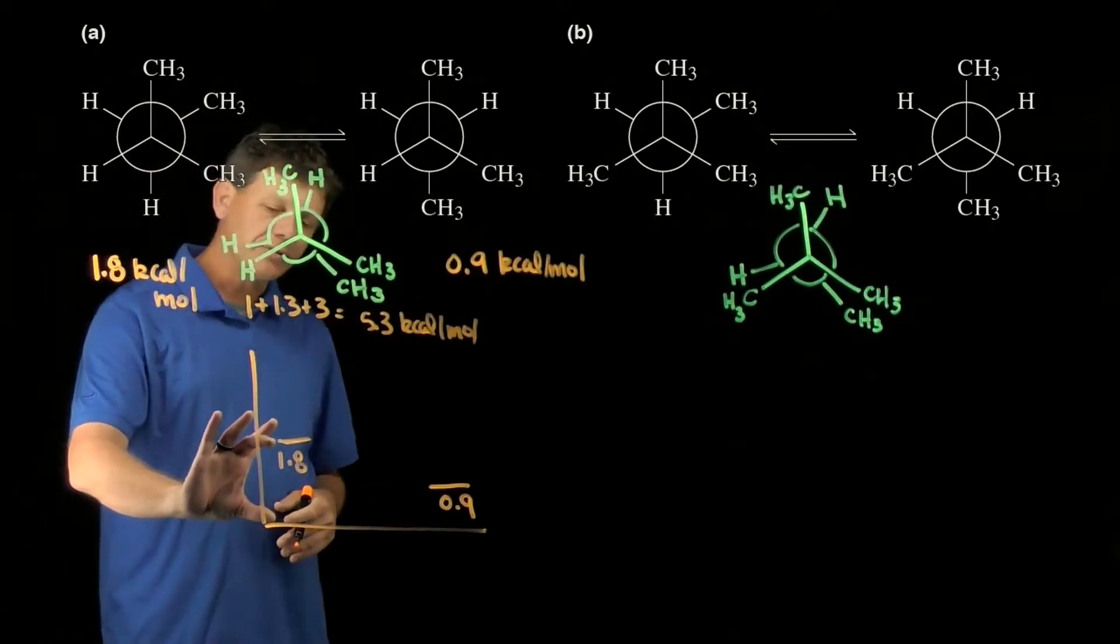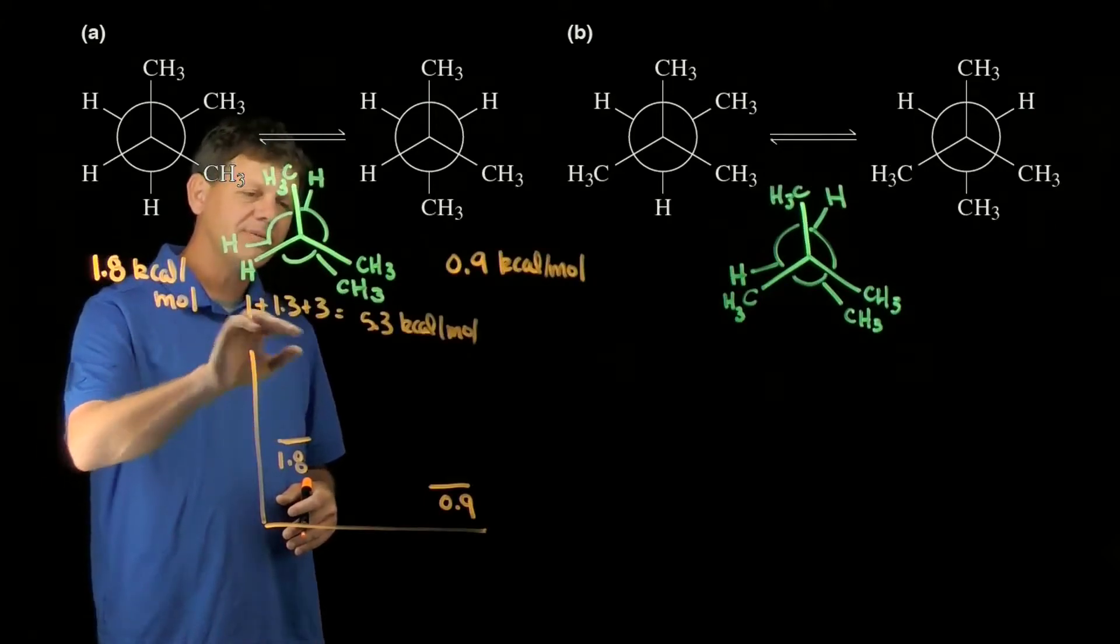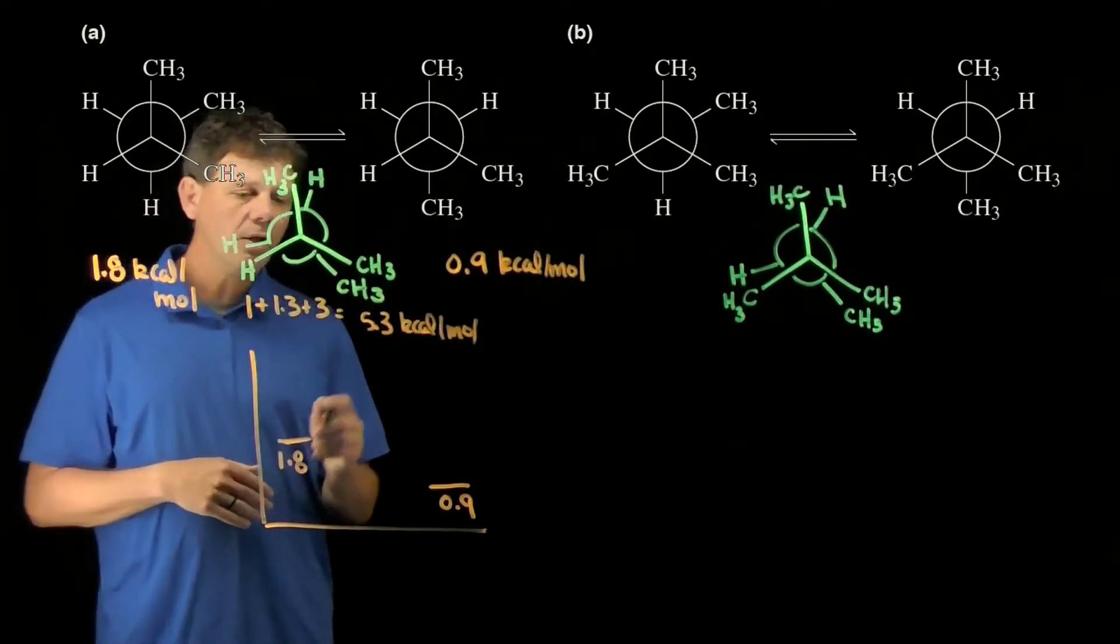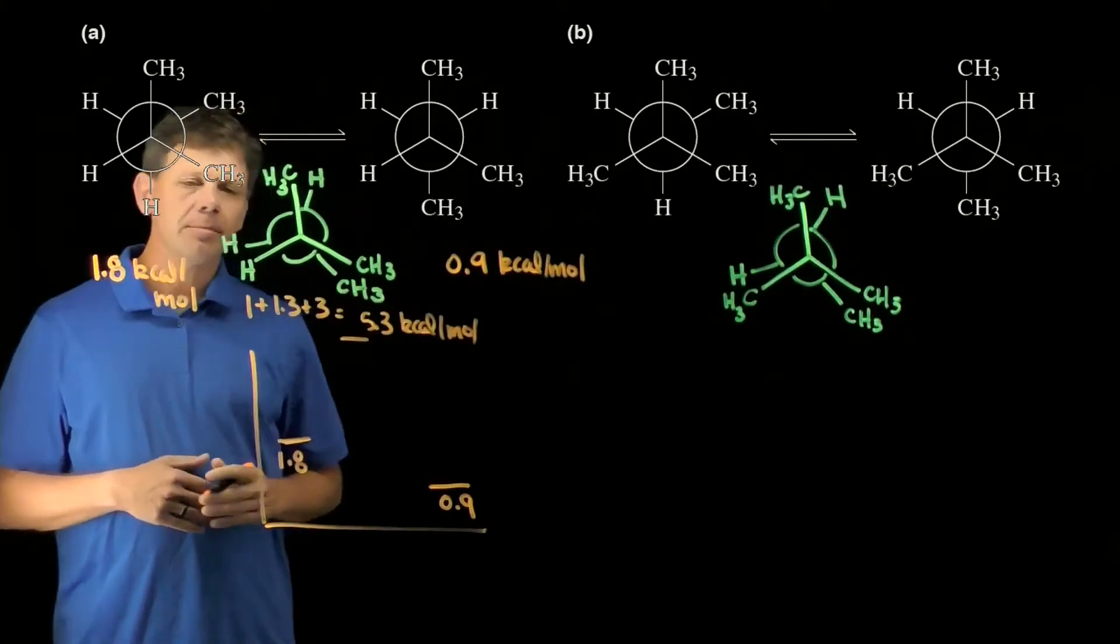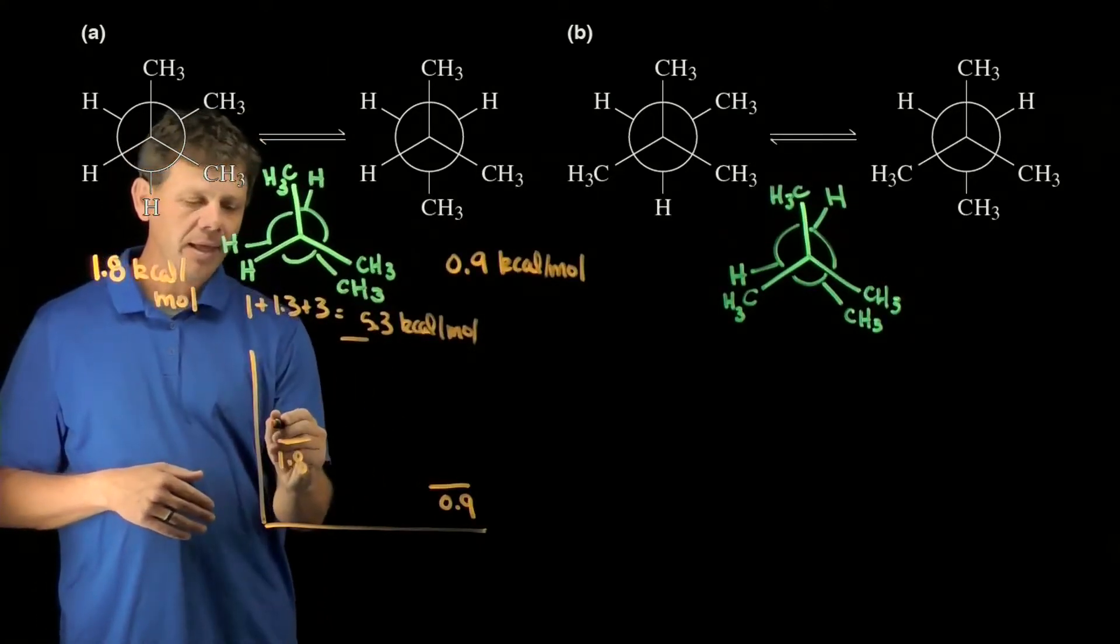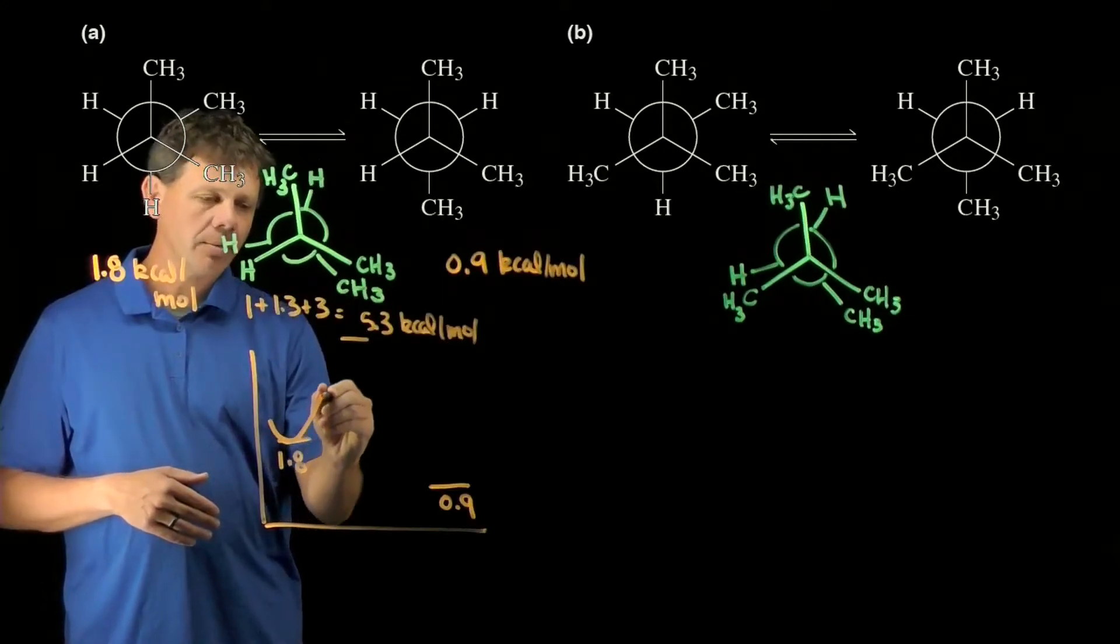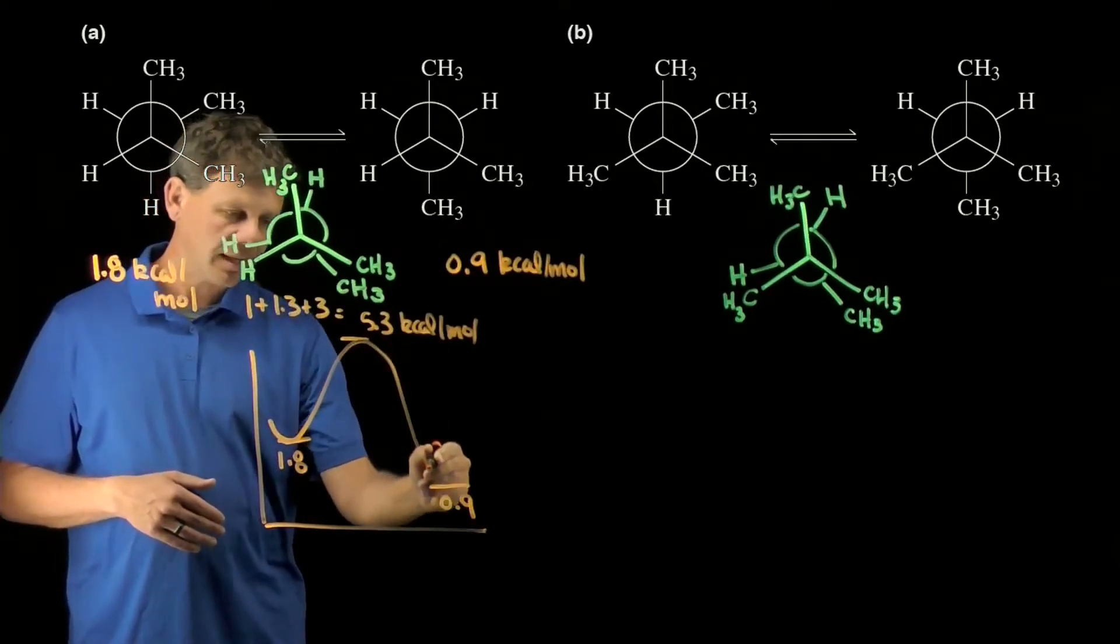Well, if this is 1.8 then this would be about 3.6. We're going to run out of room for the scale here, but let's just put that our transition state is going to be at this point here, and so our reaction coordinate diagram would look something like this.